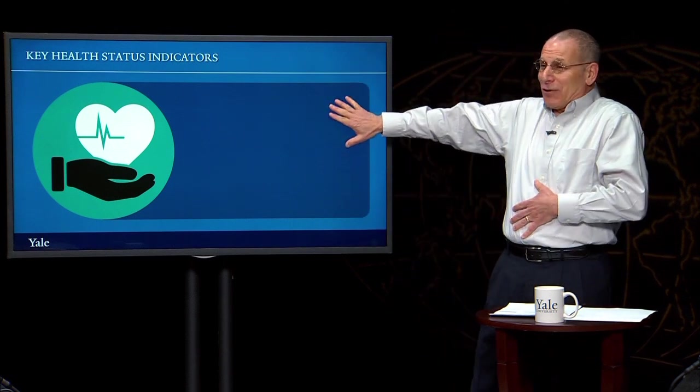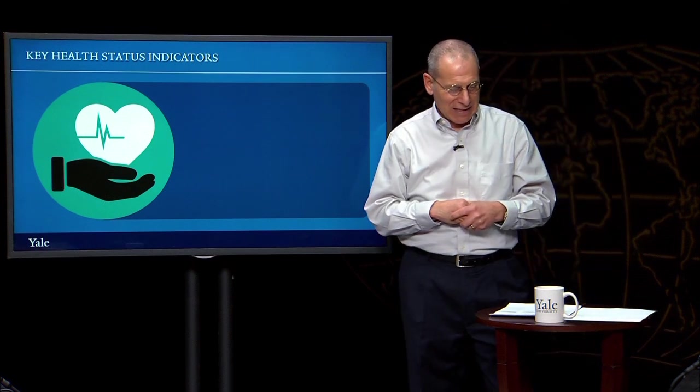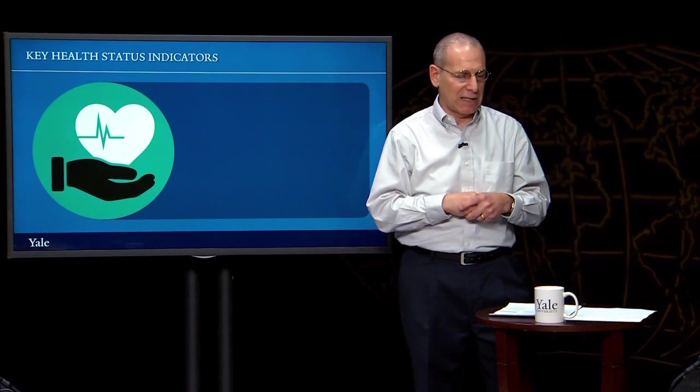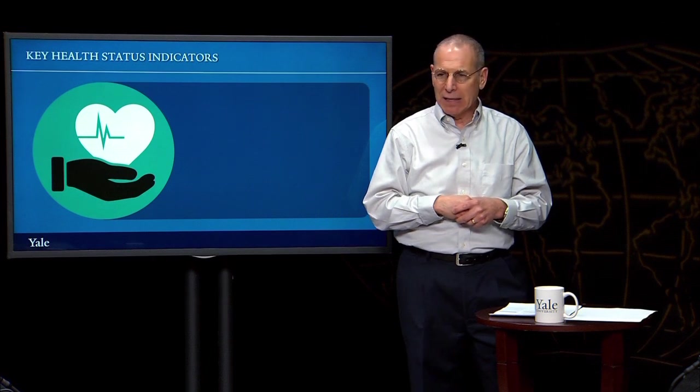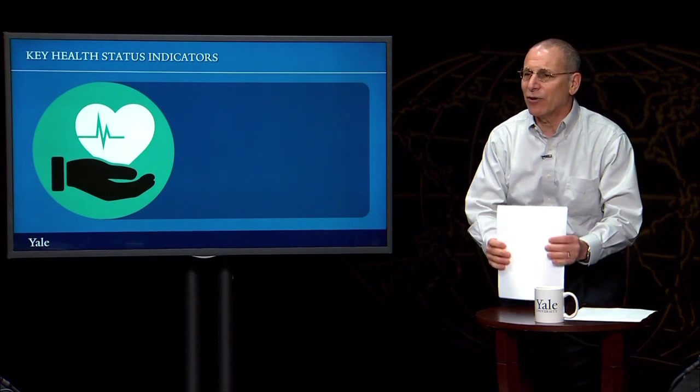Before showing the definitions, let's ask the students about some of the important definitions of key global health indicators. Emily, what is the maternal mortality ratio? The maternal mortality ratio is the number of women who die from pregnancy-related causes for every 100,000 live births.